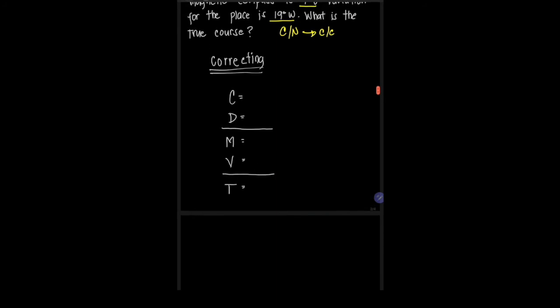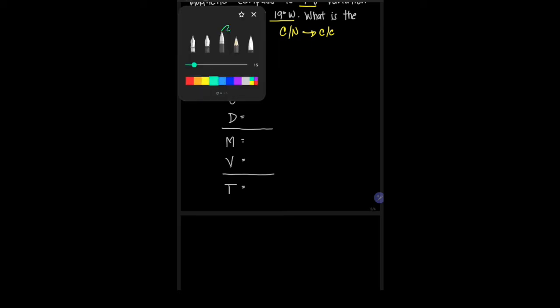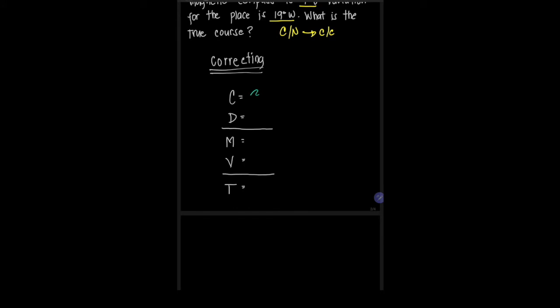For correcting the magnetic compass, we follow a formula. This is the CDMVT: C is your compass course, D is your deviation, M is your magnetic course, V stands for variation, and T stands for true course.